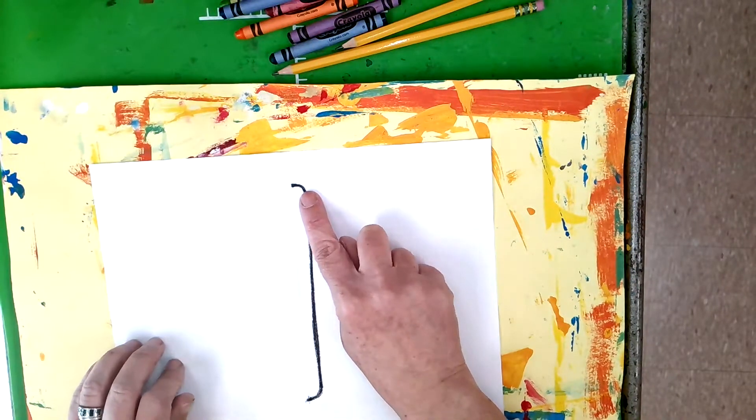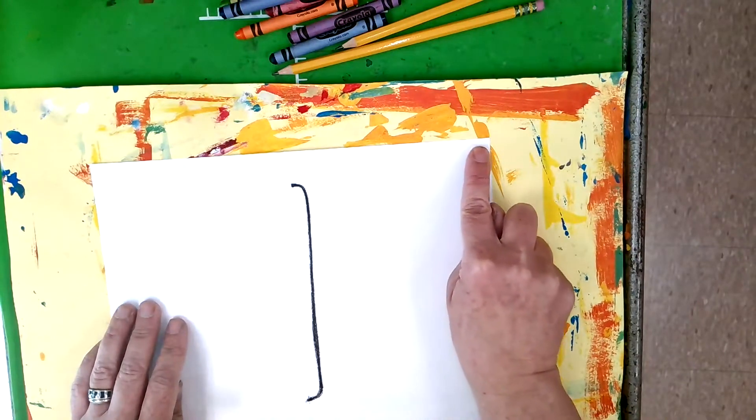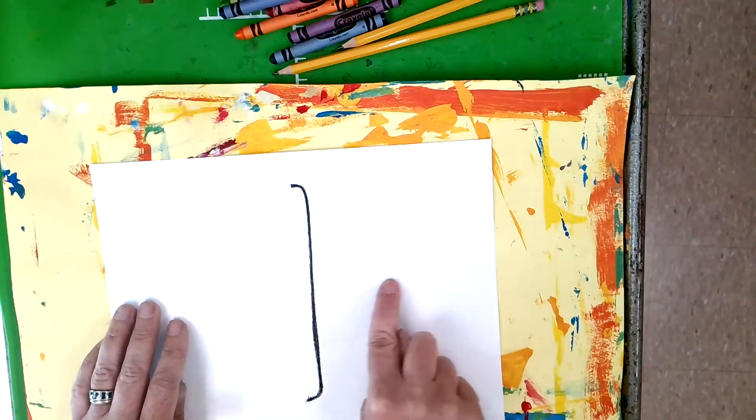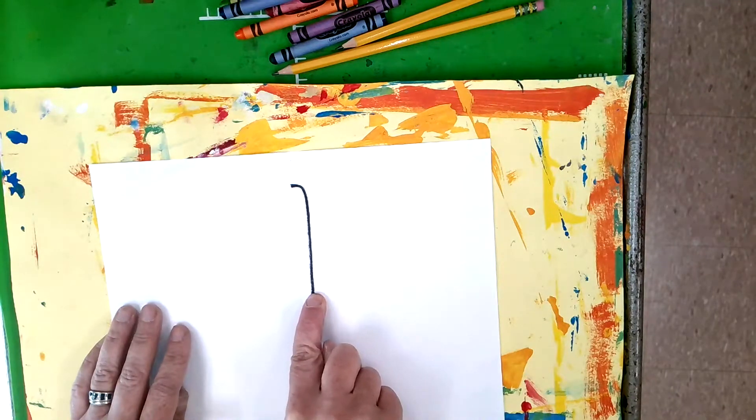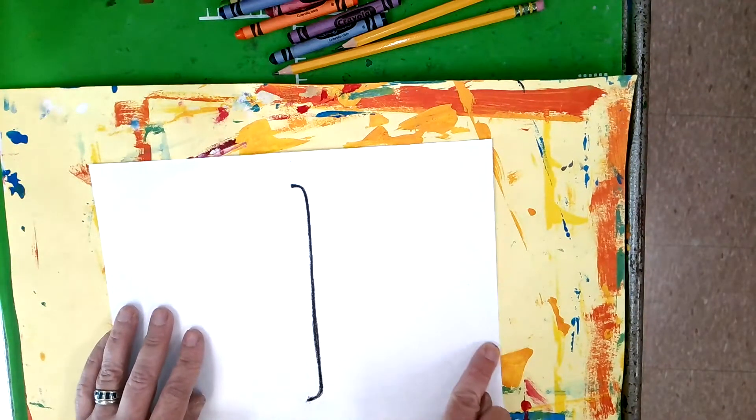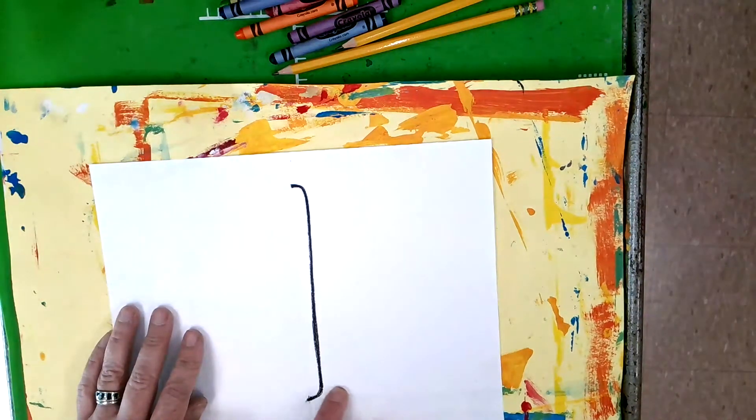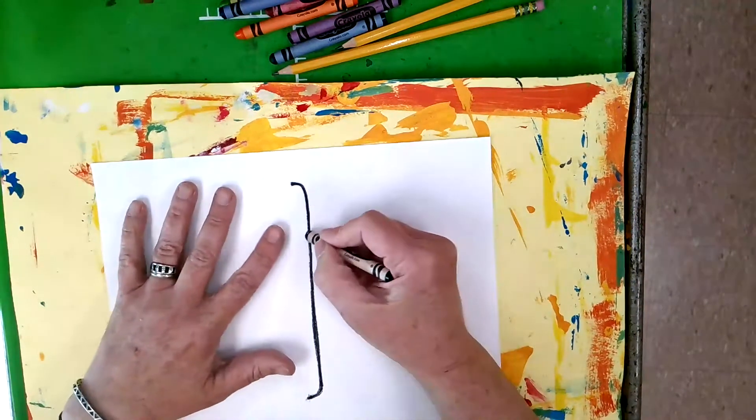I'm going to do it one more time with my finger. I'm going to come all the way out to the edge of this paper, move back around to the body of the butterfly, back out to the edge of the paper, back around to the body of the butterfly. Let's try it now with our crayon.